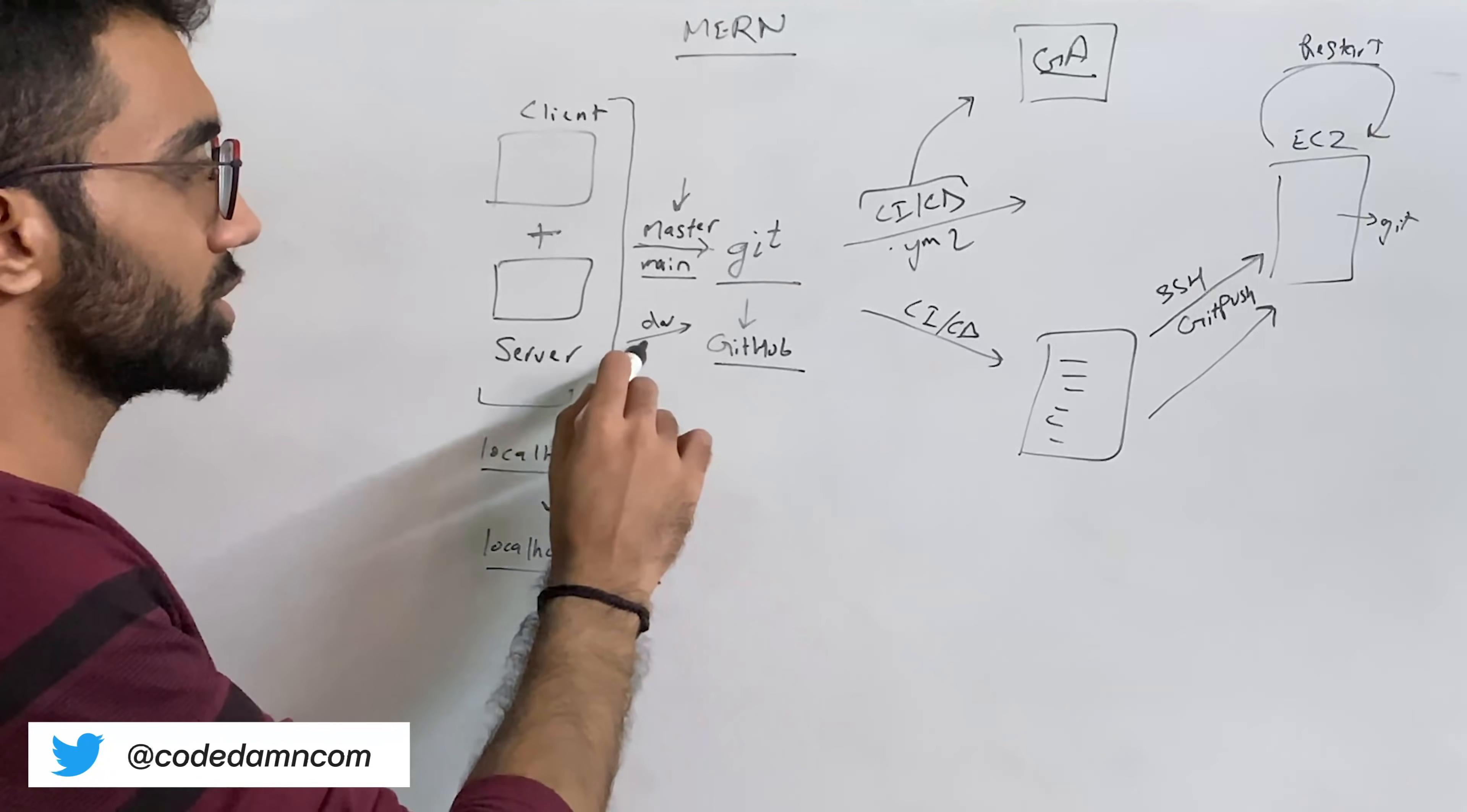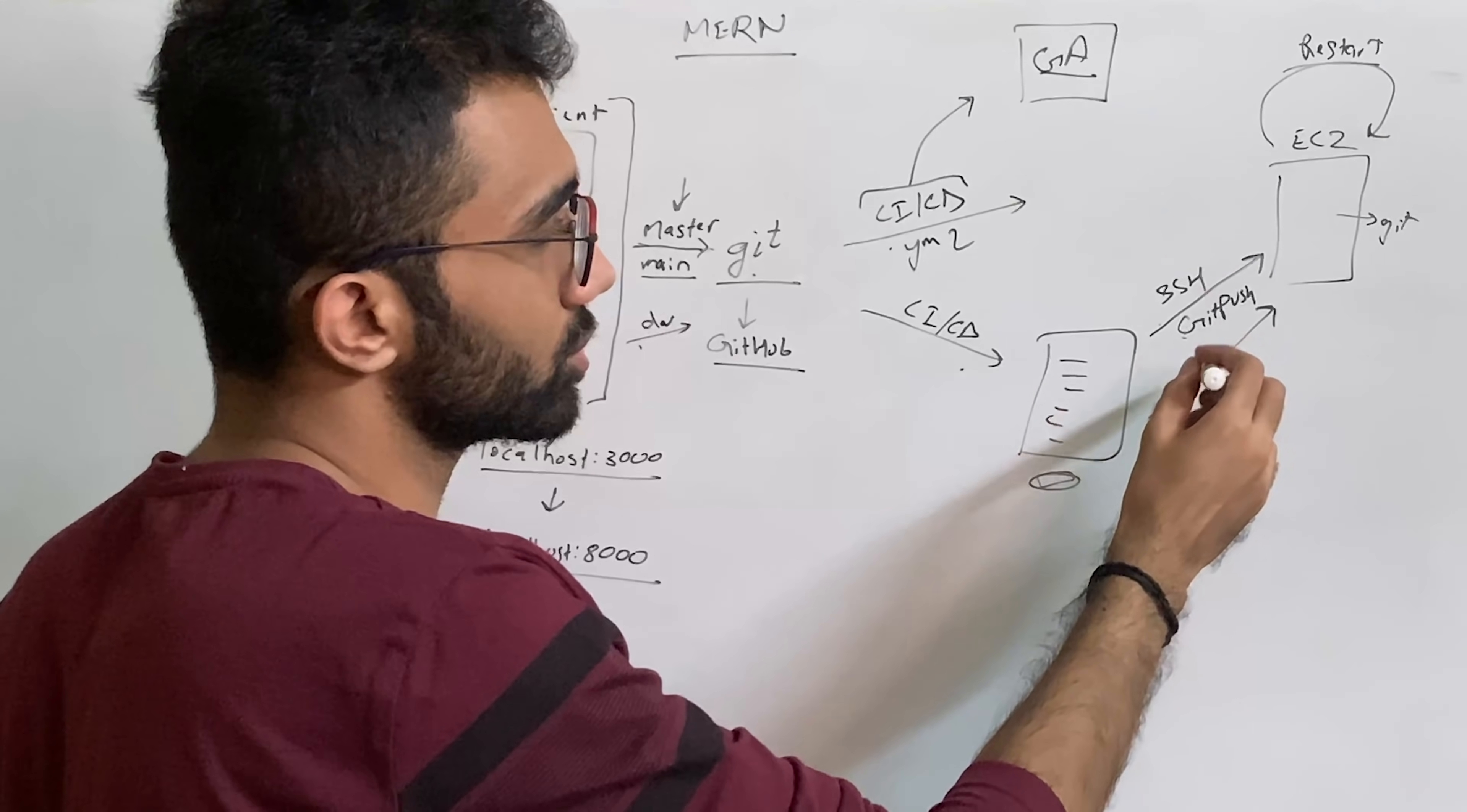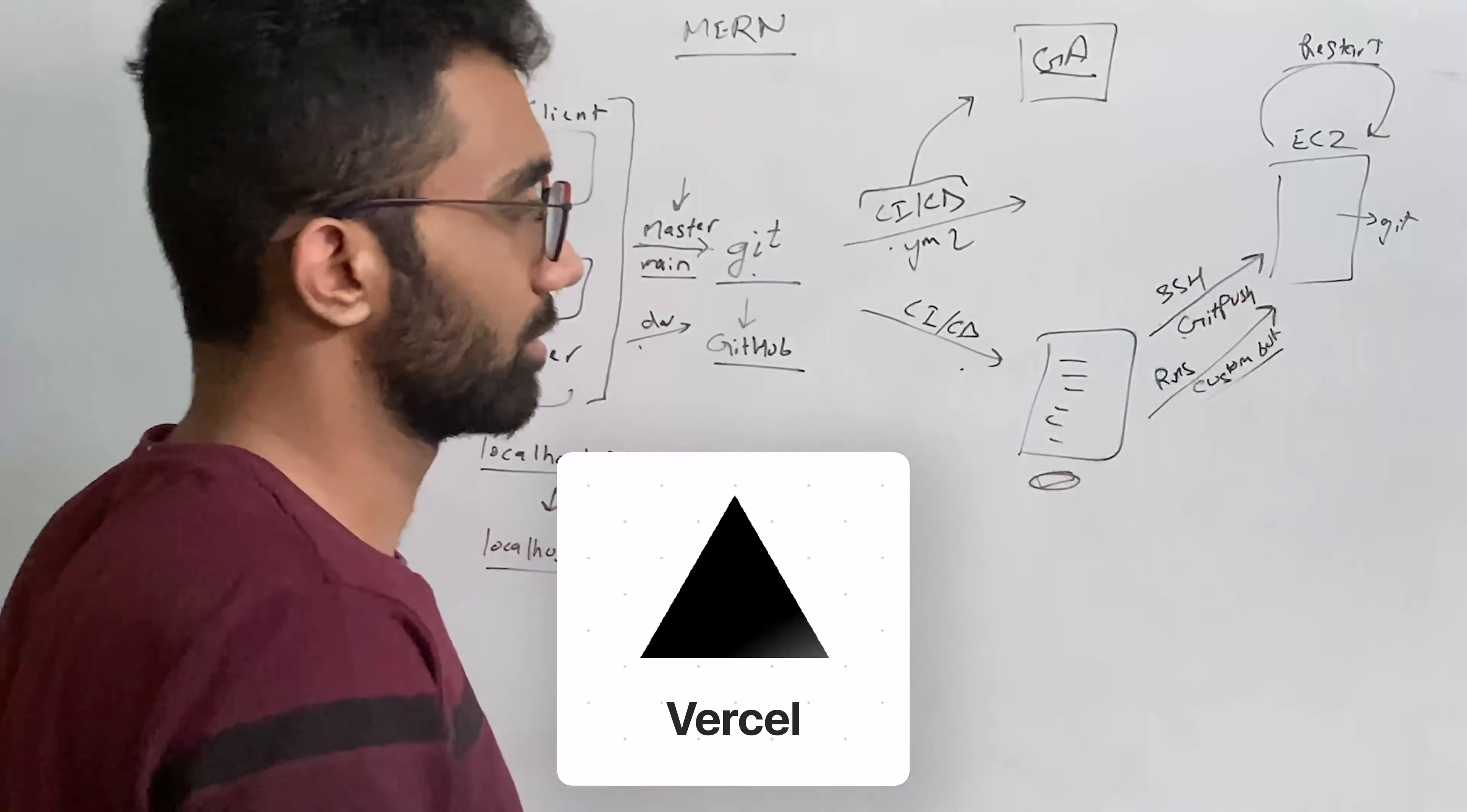So this is the flow: you push it to a Git repository, the CI/CD process runs, it builds the server somehow, whatever the steps are, it SSH or Git push or runs a custom action. For example, in case of Vercel, Vercel runs a custom action, so a custom bot or action on your hosting provider, and it makes that build live on the production.